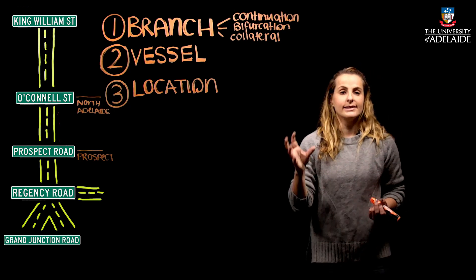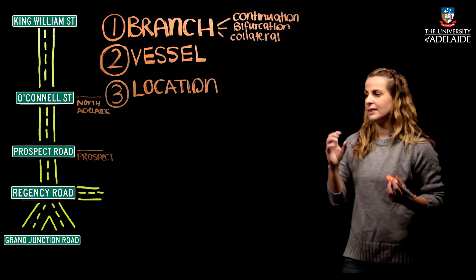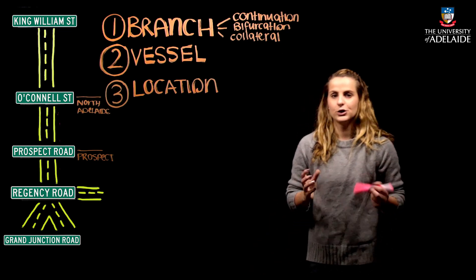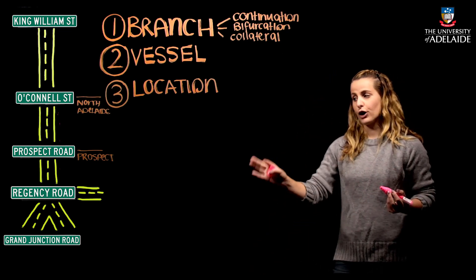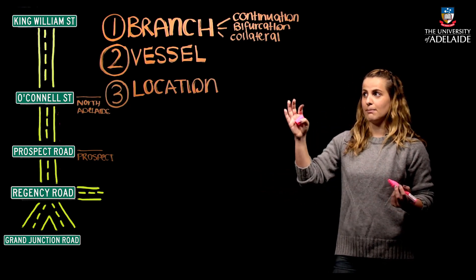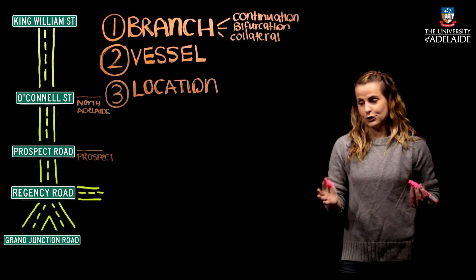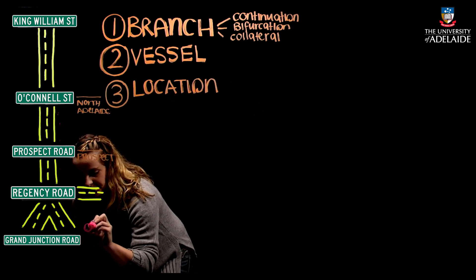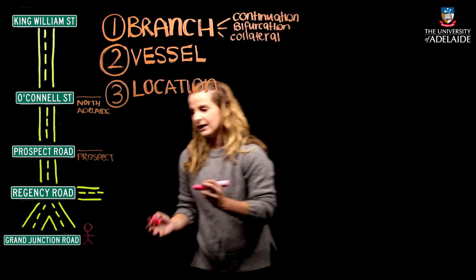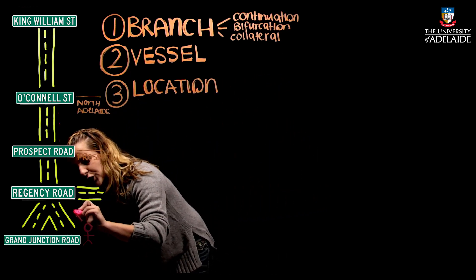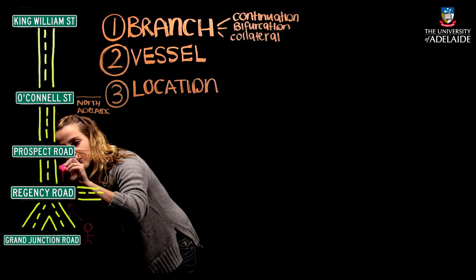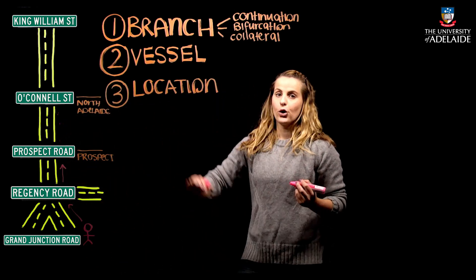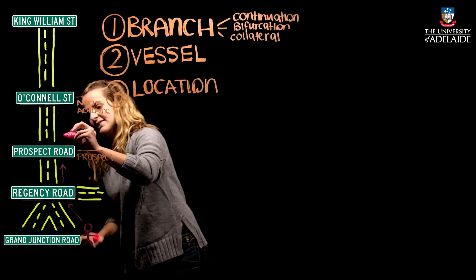The same three elements apply when talking about veins, but the main difference is obviously going to be the direction of blood flow. Imagine traveling from Grand Junction Road heading back into Adelaide CBD. Blood flow goes from the most distal aspects of the body back proximally into the heart and the circulatory system.